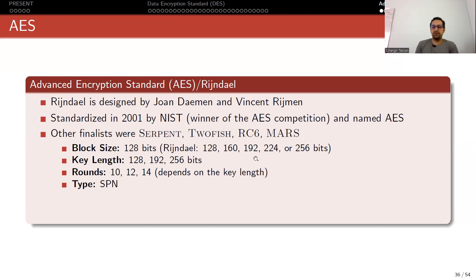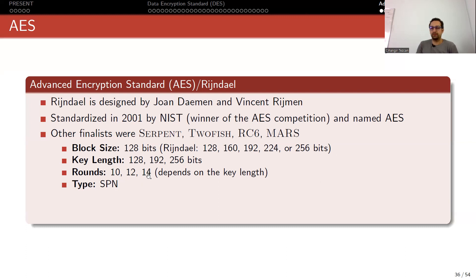Rijndael supported many different block sizes, but NIST preferred a single block size for simplicity. AES has a 128-bit block size and supports three key lengths. 128-bit security is enough for personal use - with this key length the number of rounds is 10. If you want military-grade security you can prefer 256-bit keys, but then you have to increase the number of rounds from 10 to 14, which is 40% more.